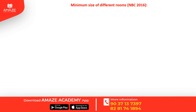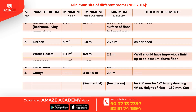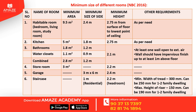The minimum height of a habitable room is 2.75 meters. The minimum width of a habitable room is 2.4 meters. The headroom is 2.5 meters.